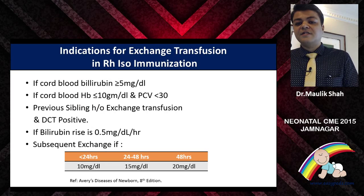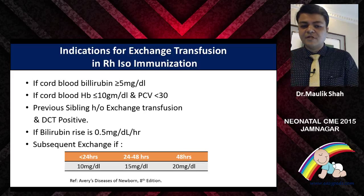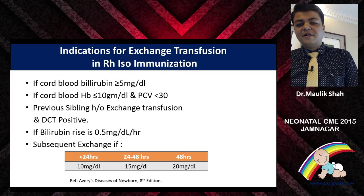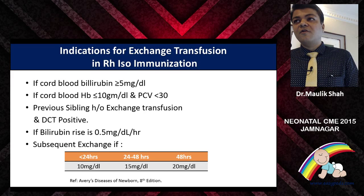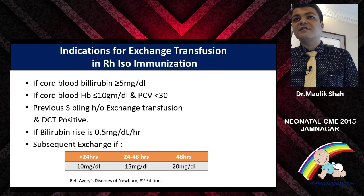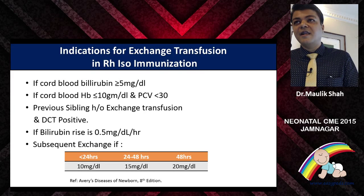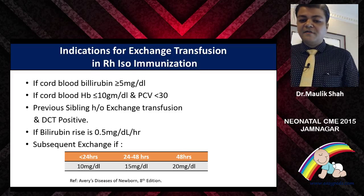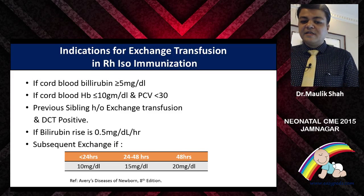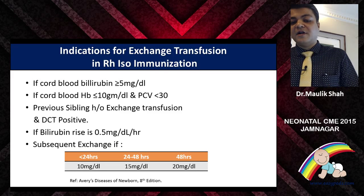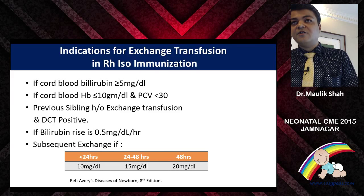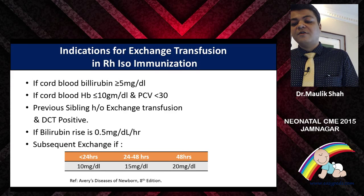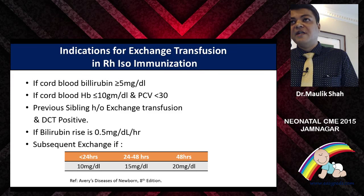Indications for exchange transfusion in RH isoimmunization are listed in textbooks. These are cord blood bilirubin values — many of us forget to send cord blood investigations; please make a habit of sending them. Previous sibling with history of exchange transfusion and DCT being positive are indications. Bilirubin rising 0.5 mg/dL per hour is also an indication. Serially monitor these babies: bilirubin of 10 or more at less than 24 hours, 15 or more at 24–48 hours, or 20 or more at 48 hours indicates a second exchange transfusion.